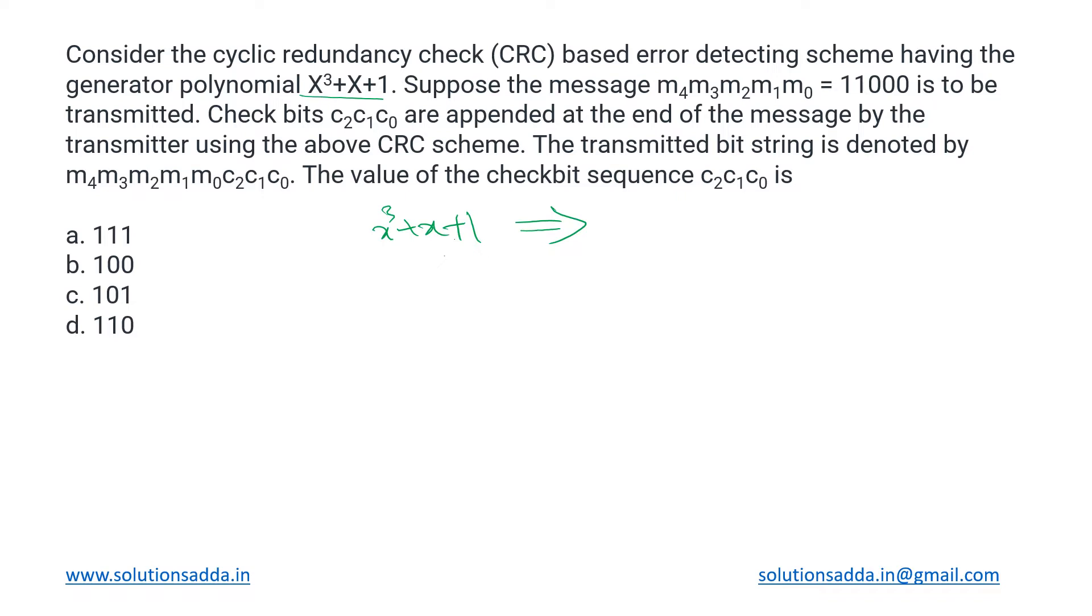First we can convert it into the polynomial form entirely. Because the x squared term is missing, that will become x cubed plus zero x squared plus x plus one. Then taking out its coefficients we get the CRC generator as 1011.